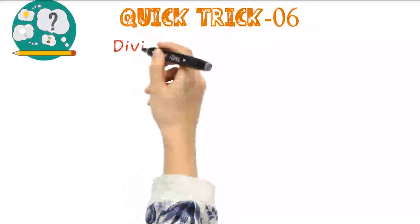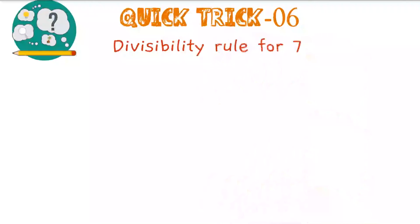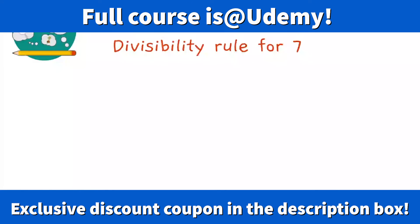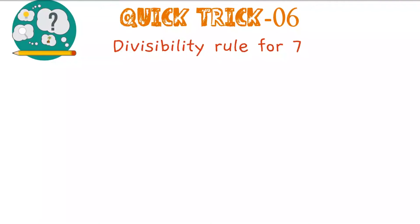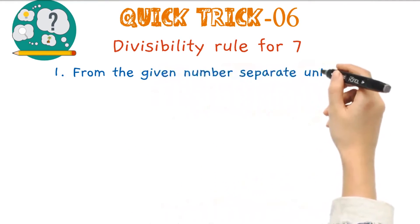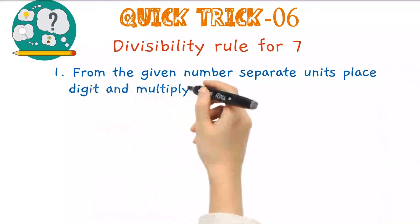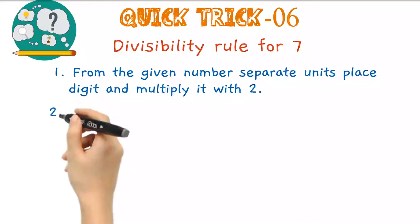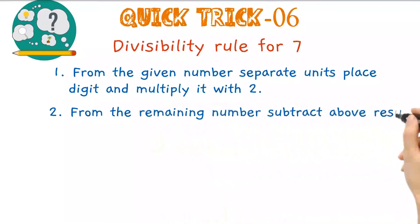Next trick is the divisibility rule for number 7. Unlike your previous tricks, this is somewhat lengthy but quite helpful in practice. Here I will explain the procedure in 3 different steps followed by a set of examples. First, separate the unit's place value and multiply the digit with 2. This is your first step. In the second step, consider the remaining number and subtract the above result from it.